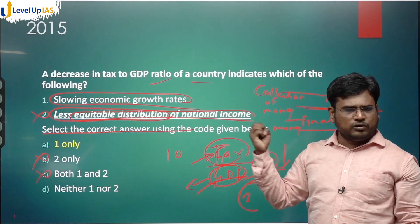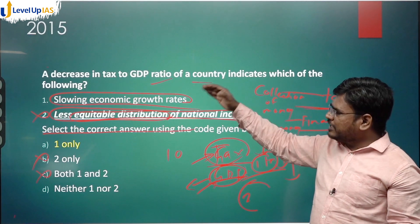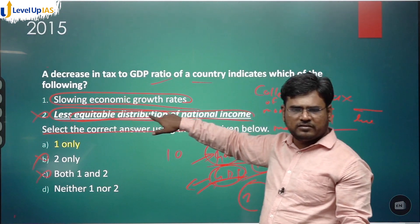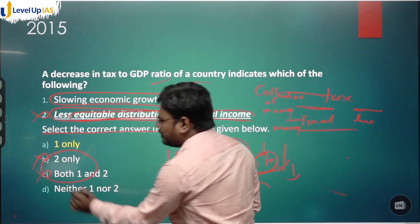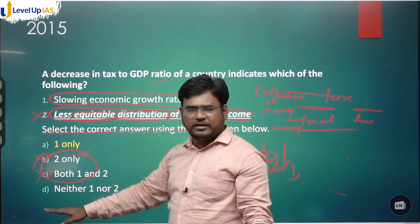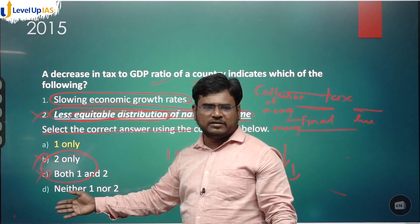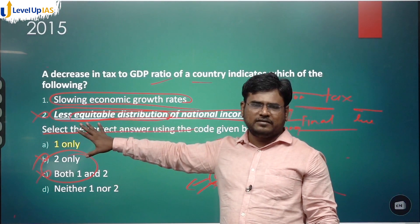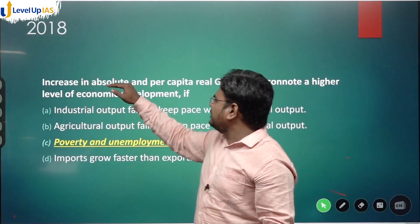Even if you don't have that knowledge, at least you can remove statement two, leaving you with 50 percent chance between two options. Now the next question: increase in absolute and per capita real GNP cannot indicate a higher level of economic development. Identify and underline keywords whenever you solve a question, as every keyword gives you the answer.